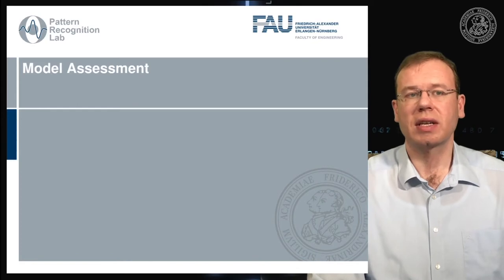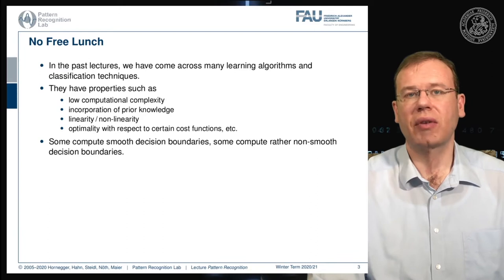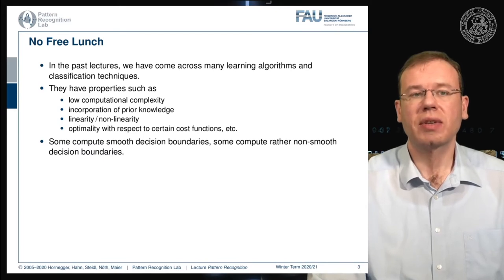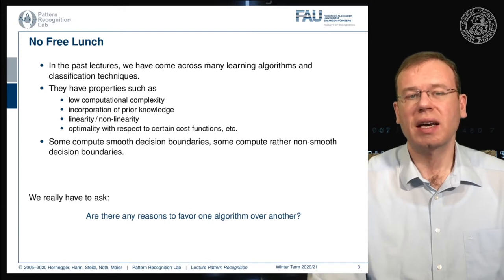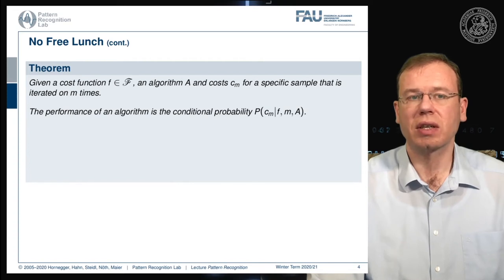Let's see how we can actually assess different models. In past lectures we have seen many different learning algorithms and classification techniques with different properties: low computational complexity, incorporation of prior knowledge, linear and non-linear algorithms, and optimality with respect to certain cost functions. Some methods compute smooth decision boundaries, others non-smooth ones. But what we really have to ask is: are there any reasons to favor one algorithm over another? This brings us to the no free lunch theorem.